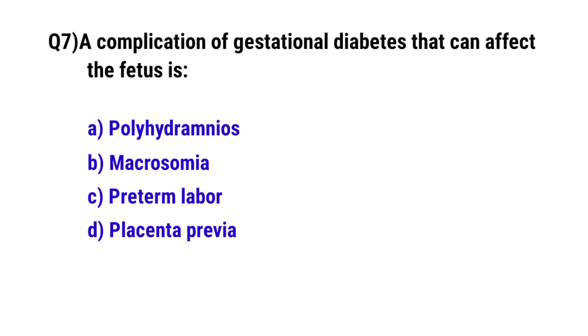Question number seven: A complication of gestational diabetes that can affect the fetus. The correct option is B, macrosomia.